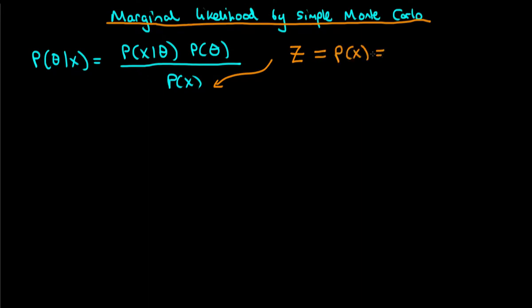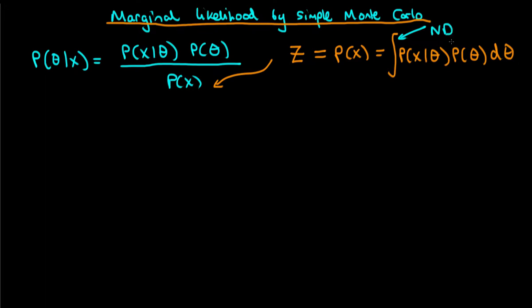How do we obtain that mathematically? Well, we obtain it by integrating the numerator of Bayes' rule, and that's given by the product of the likelihood times the prior, integrating with respect to our parameter vector theta. The integral here is in principle an n-dimensional integral, where n is the number of parameters in your model. And we know from practice that actually calculating n-dimensional integrals is very difficult if n is above about 3.